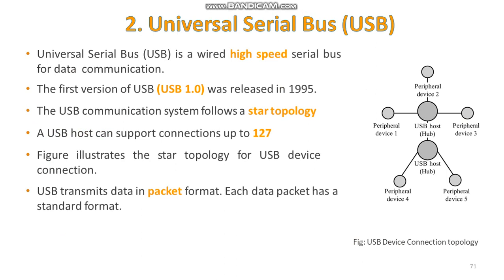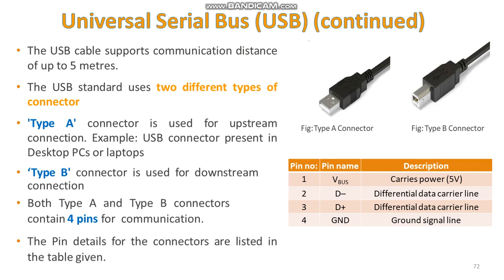The next example is Universal Serial Bus (USB). USB is a wired high-speed serial bus for data communication and is the most popular connection used to connect a computer to devices such as digital cameras, printers, scanners, and external hard drives. The first version, USB 1.0, was released in 1995. It follows a star topology with a USB host at the center and one or more USB peripheral devices connected to it. It supports up to 127 devices including slave peripheral devices and other USB hosts. USB transmits data in packet format, supports distances up to 5 meters, and consists of two types of connectors — Type A and Type B.